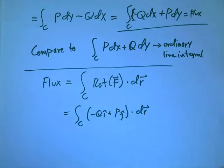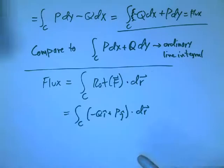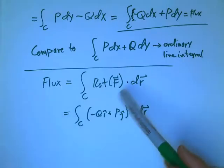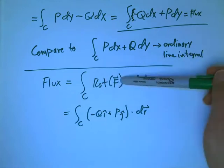Continuing the story of the two-dimensional divergence theorem, we've got to the point of defining the flux of a vector field through a curve. I just pointed out that one clever way to look at it is you do the ordinary line integral of a new vector field, the rotated version of F.